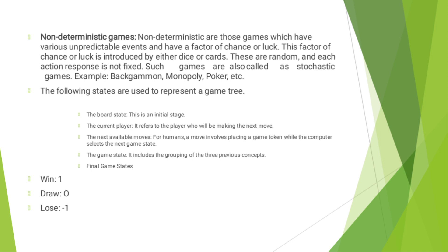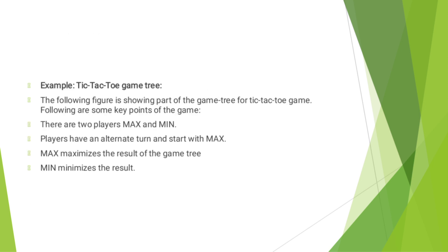The following states are used to represent a game tree: Board State, Current Player, Next Available Move, Game State, and Final Game States. Board State is the initial state. Current Player refers to the player who will be making the next move. The next available moves for humans involve placing a game token while the computer selects the next game state. The game state includes the grouping of these three previous concepts. Here, win is denoted by 1, draw is denoted by 0, and loss is denoted by minus 1. For example, in the tic-tac-toe game tree, there are two players: Max and Min. Players have alternate turns and start with Max. Max maximizes the result of the game tree and Min minimizes the result.